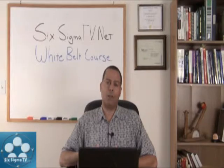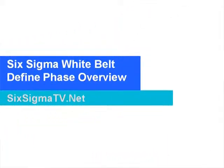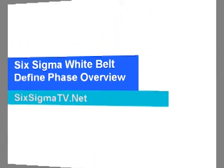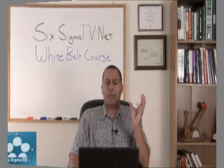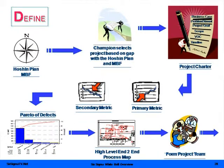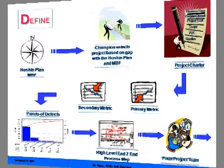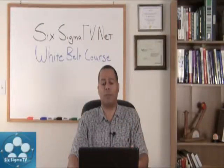Now I'm going to take you more in-depth into the Define phase. In the Define phase you want to tie your projects into your strategic business objectives — customer complaints, issues, breakdowns, market changes. That's what drives your projects. You want to make sure they're generating revenue, eliminating waste, and making your processes more efficient.